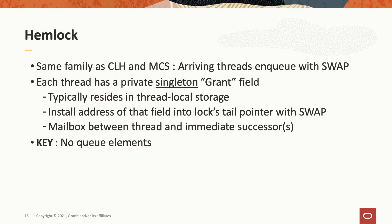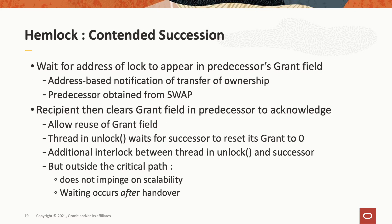We'll now shift to Hemlock. Hemlock is in the same family as MCS and CLH, and in fact is inspired by both those locks. Similar to MCS and CLH, arriving threads enqueue with a swap operation. In Hemlock, each thread has a private, singleton grant field. The grant field resides typically in thread local storage. Threads install the address of that field into the lock's tail pointer with the atomic swap operation. The grant field acts as a mailbox between threads and their immediate successors in the queues. The key to Hemlock is that there are no queue elements. We have address-based notification for transfer of ownership.